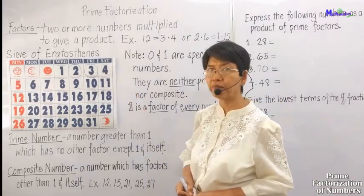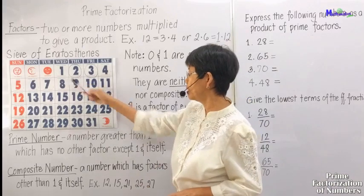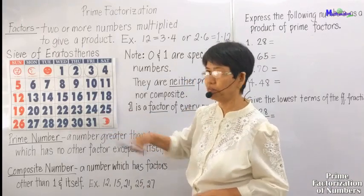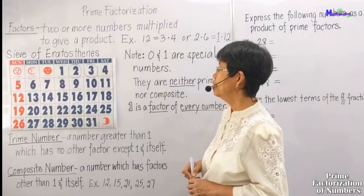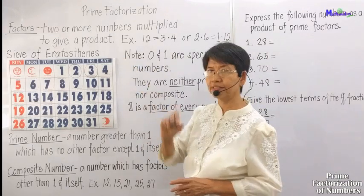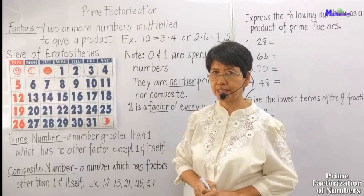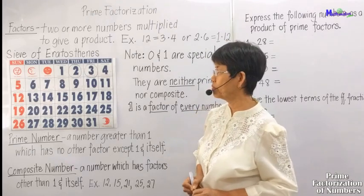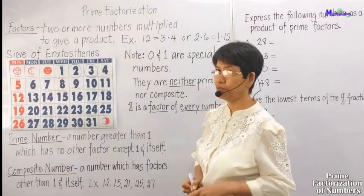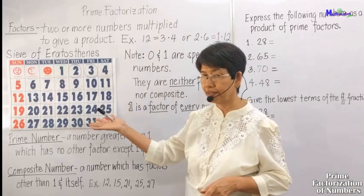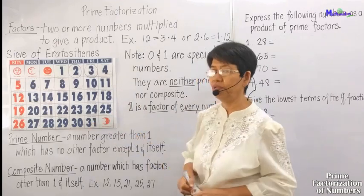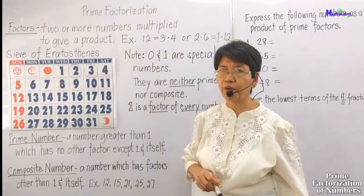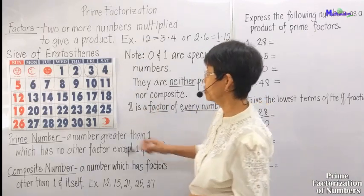Now let's go to the Sieve of Eratosthenes. We will try to get the prime numbers between 1 and 31. Eratosthenes was an ancient mathematician who used this method to get the prime numbers between 1 and a given number.